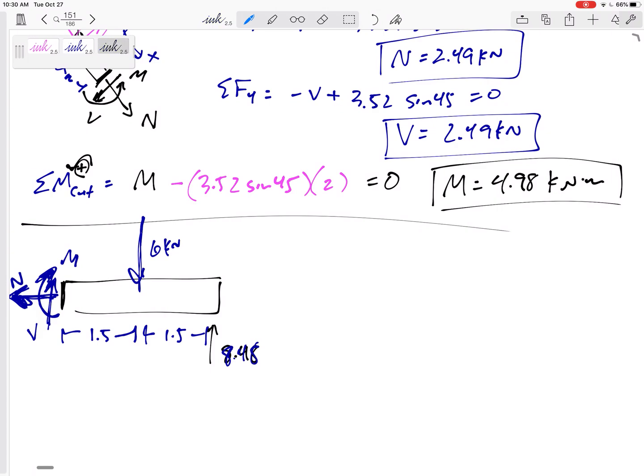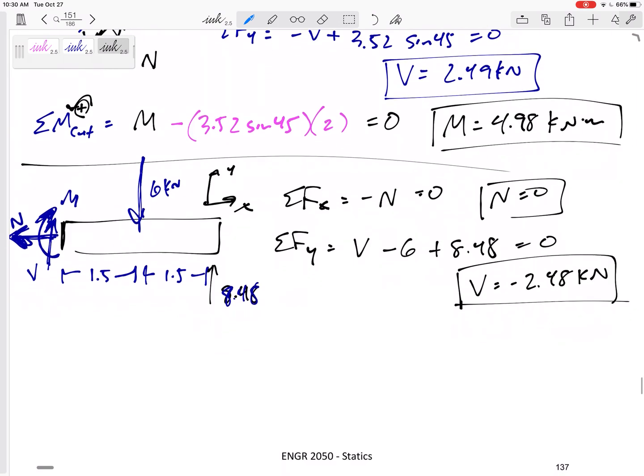All right. So I think now I am ready. Let's define my axes. Now I'm going to go back to these axes. And let's sum the forces in X. Negative N equals zero. So N equals zero. Summing the forces in Y. V is pointed up. Six is pointed down. 8.48 is pointed up. So I would get V is negative 2.48. And I'm going to leave it as negative 2.48.